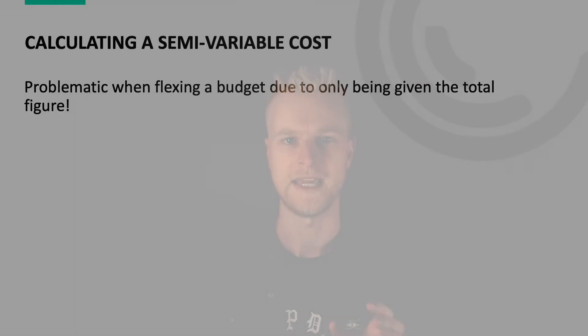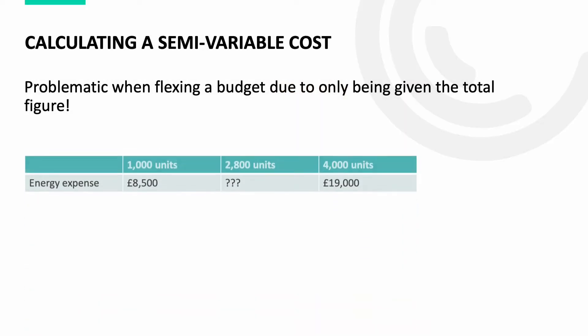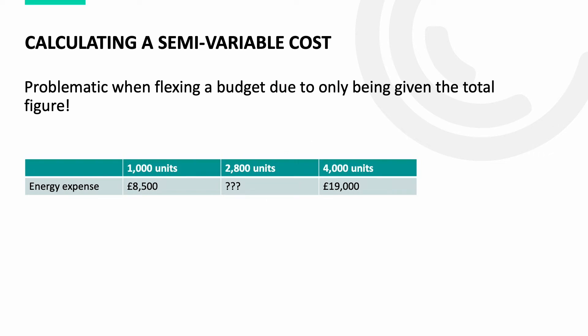When calculating a semi-variable cost, this can be problematic because in a question it will only give you the total amount of the semi-variable cost, and not the individual amounts for the variable element and fixed element. In the table on screen, we have been given the energy expense, identified as a semi-variable cost: the cost for 1,000 units is £8,500 and the cost for 4,000 units is £19,000.